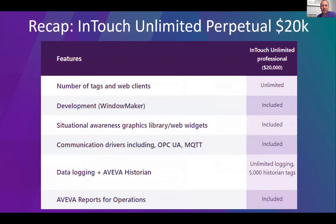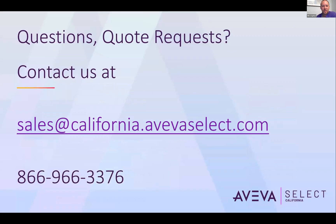To recap: InTouch Unlimited Perpetual is a one-time cost of $20,000. It includes unlimited InTouch tags, unlimited InTouch clients from your server, development and all graphics libraries, the communication drivers, the Aviva Historian, and Aviva Reports. If you have any questions on InTouch Unlimited or would like a quote request, you can always email us or give us a call, and we'd be happy to answer your questions. Thank you.